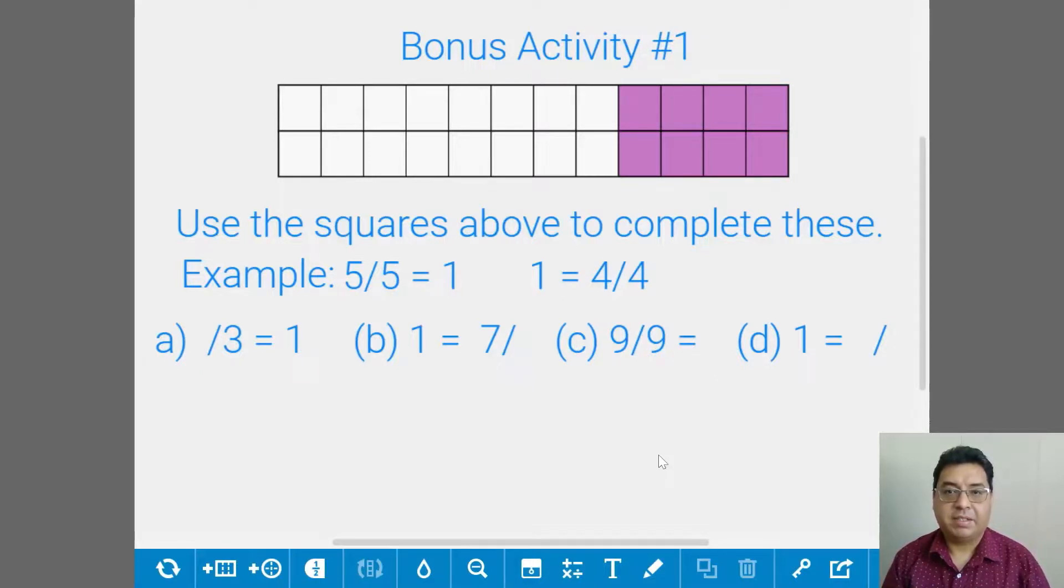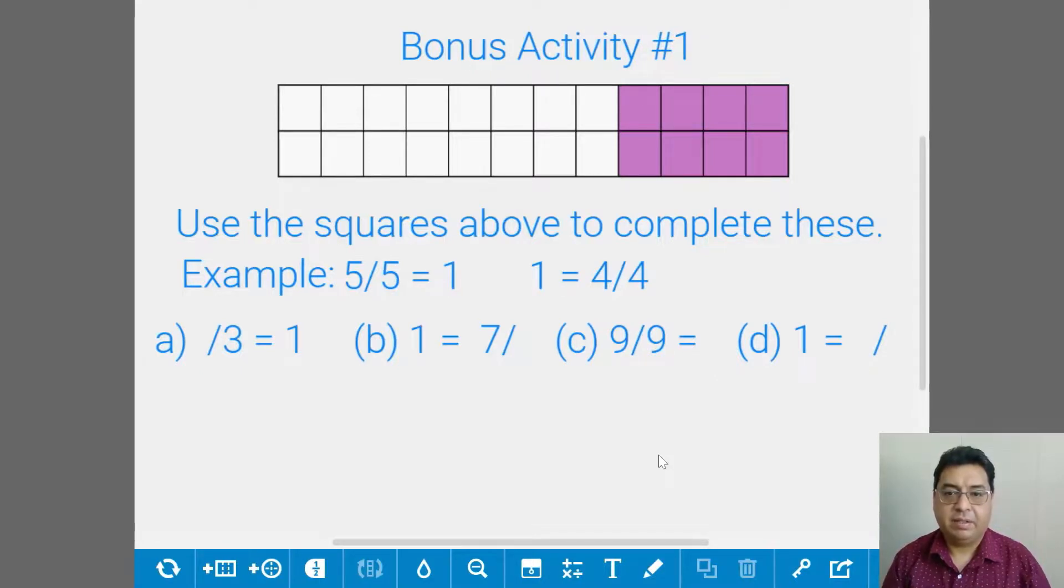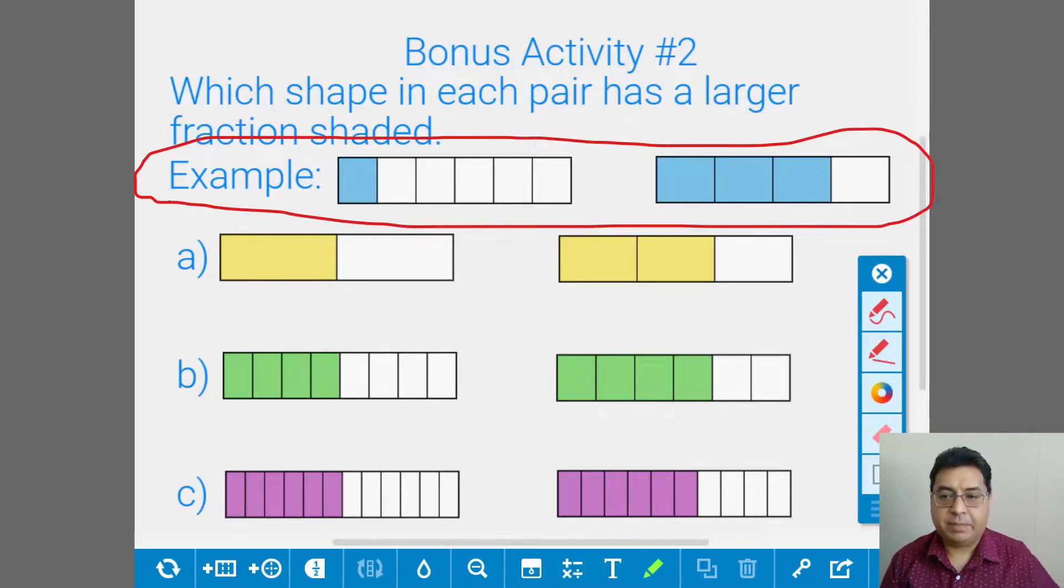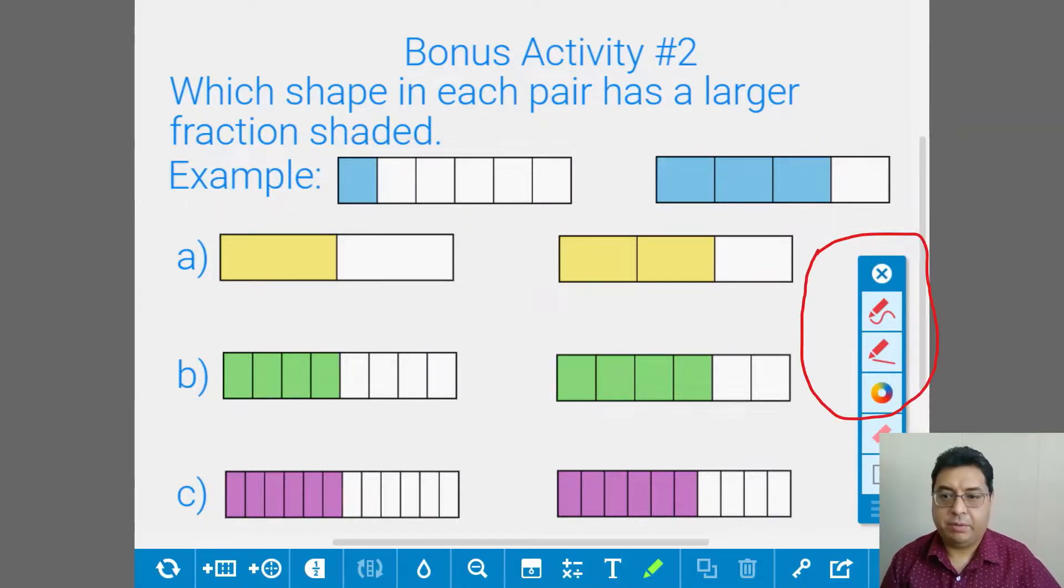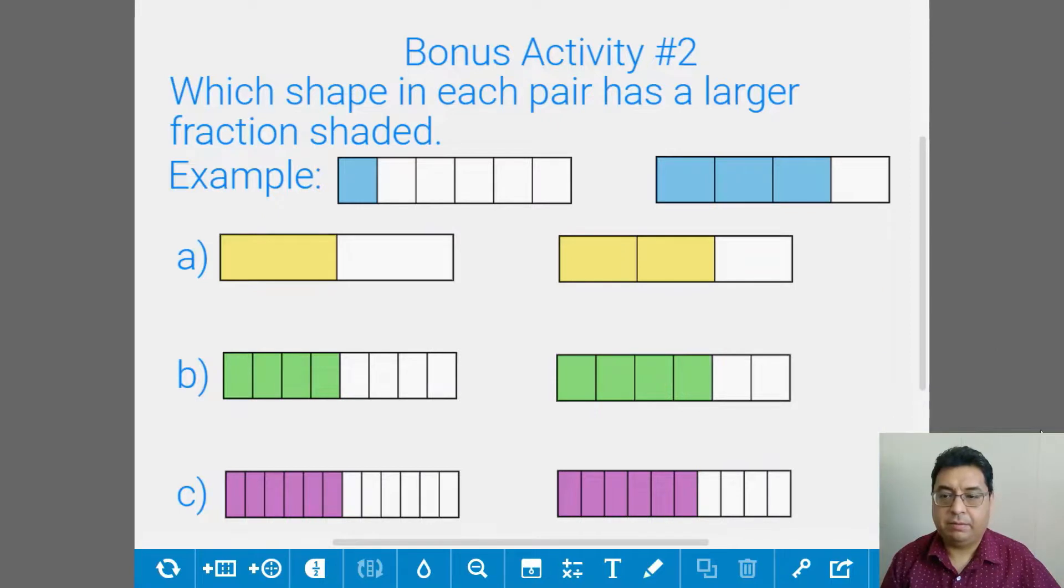Let's take a look at the second bonus activity now. So for the second bonus activity, the question says, which shape in each pair has a larger fraction shaded here? So I put this pen feature here, just so if you want to circle it, you can use that. So I'm going to close it off, but it'll be available for you in the link here. The second one here has the larger fraction shaded. So I'm circling it here and basically do the same thing for A, B, and C.